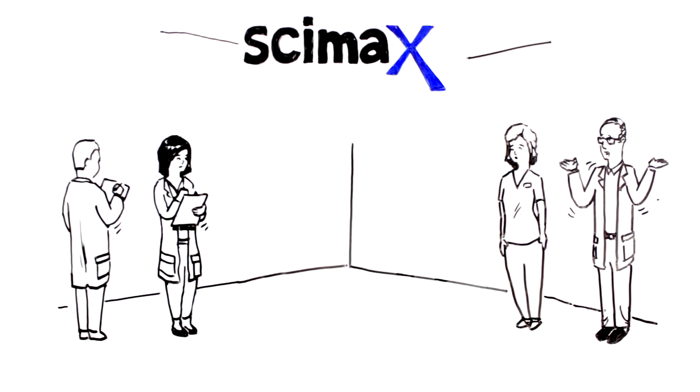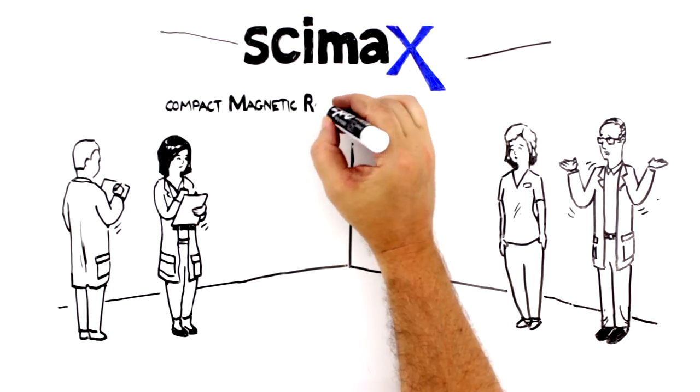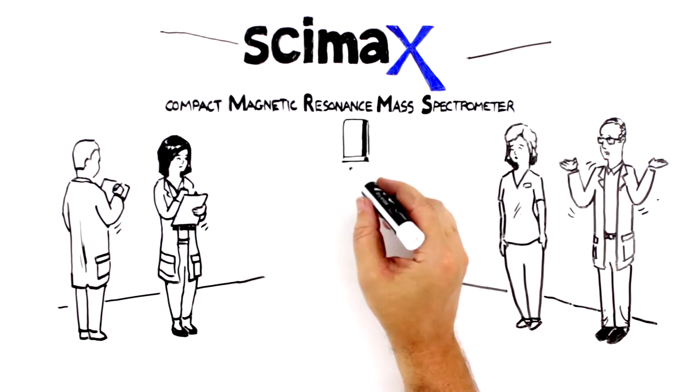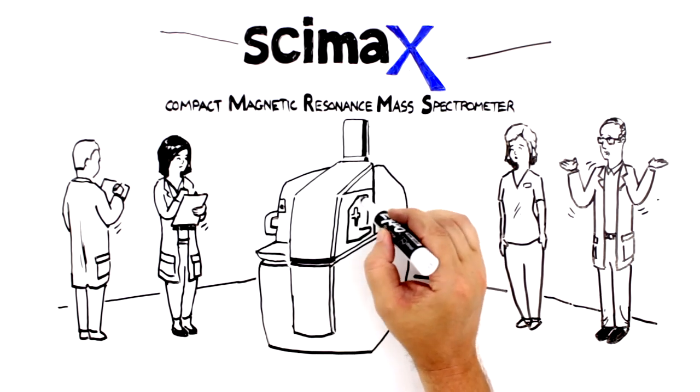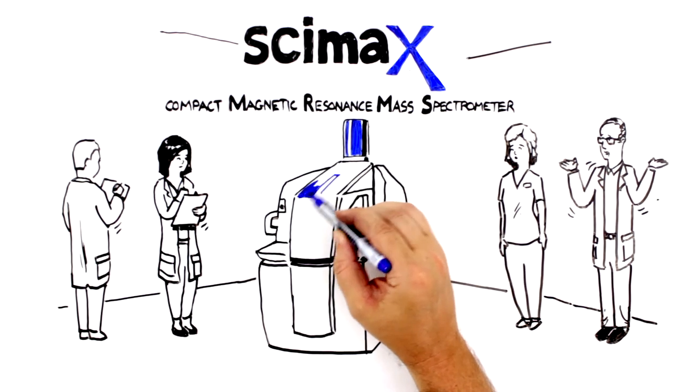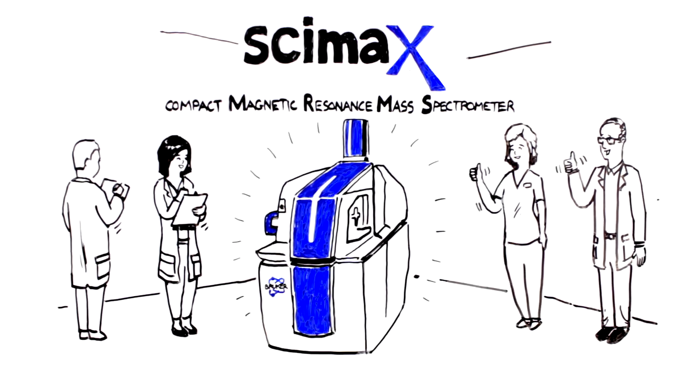Enter the Symax revolution. Symax is an integrated compact MRMS magnetic resonance mass spectrometer that fits easily into your lab and offers multiple compelling advantages over conventional Fourier transform mass spectrometers, helping to accelerate your work and concentrate on the science, not the instrument.